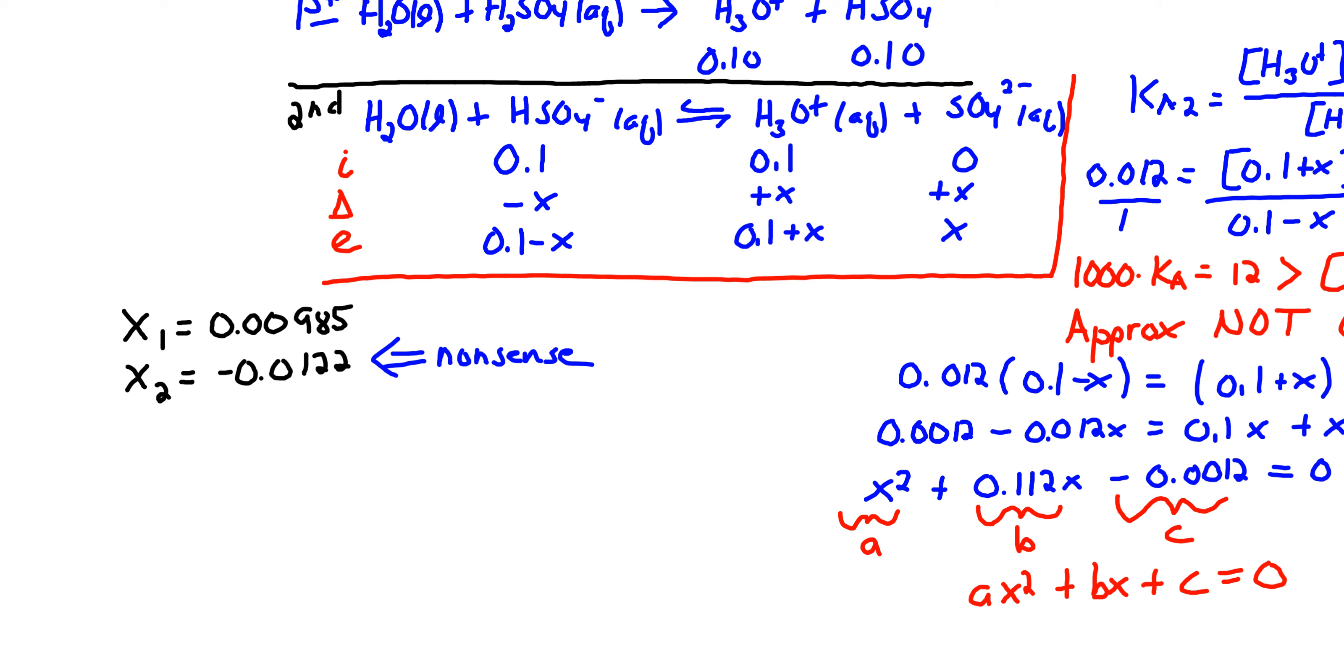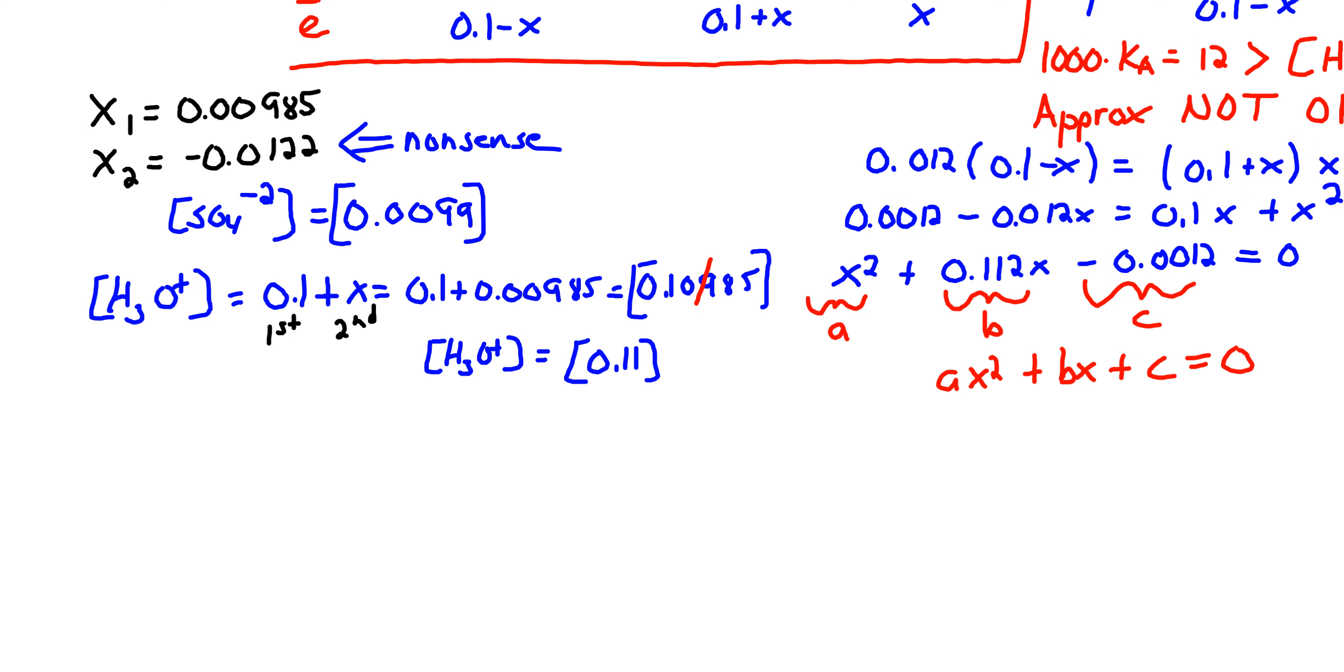X1 is now our value for x, which we see is the H3O+ that we get from the second dissociation and is the concentration of the sulfate ion.